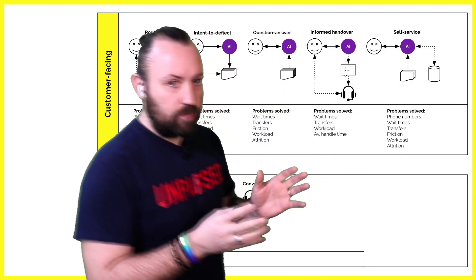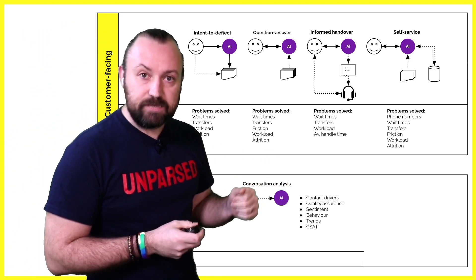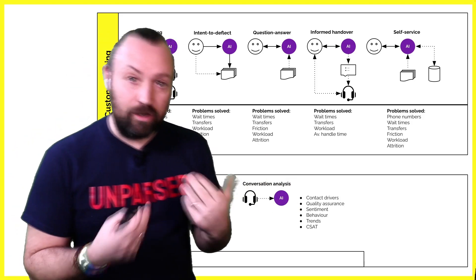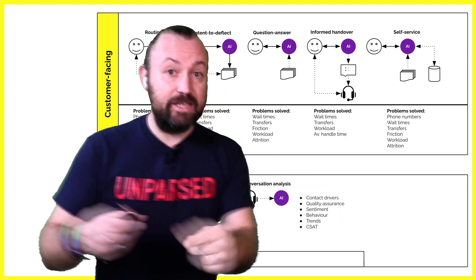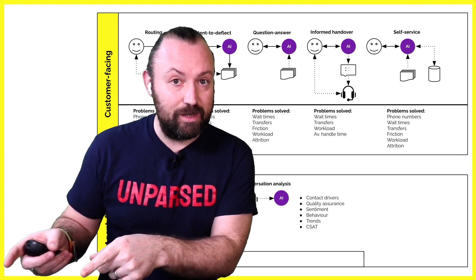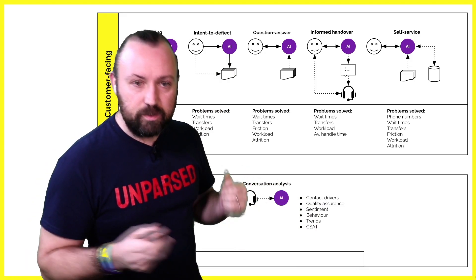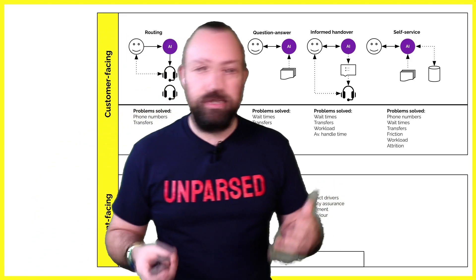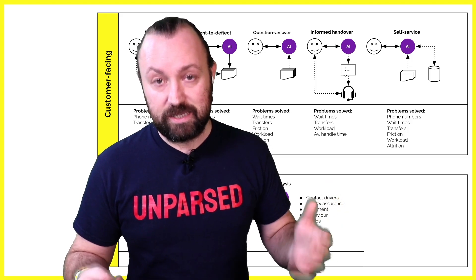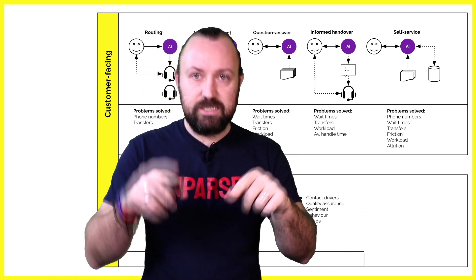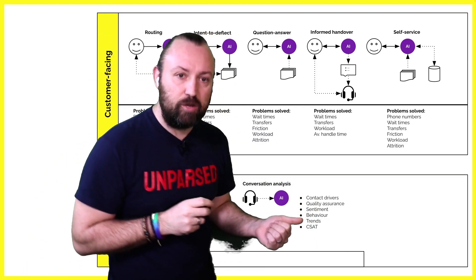The next use case is conversation analysis. We can look at things like contact drivers, quality assurance, sentiment, and behavior. What is the agent behavior? Can we learn from agents that are performing really well — why they're performing well — and feed that into training other agents with best practice? Can you find trends within your customer base to improve your business? And can you do things like predicting CSAT or NPS? There's a whole load of markers that give you an indication about whether your customer is satisfied, especially in the chat channel — things like typing a question mark are always detractors, and we can use AI to pick up on that.